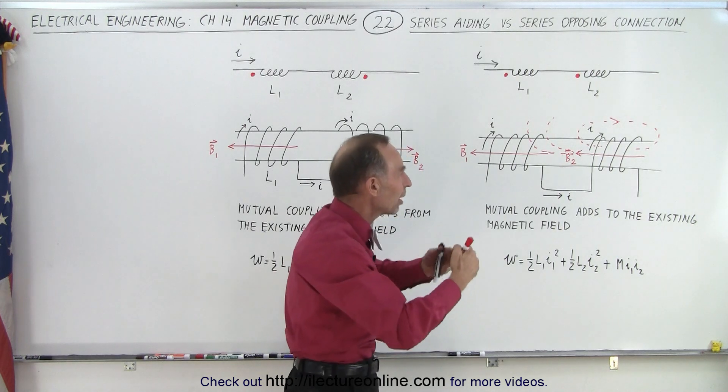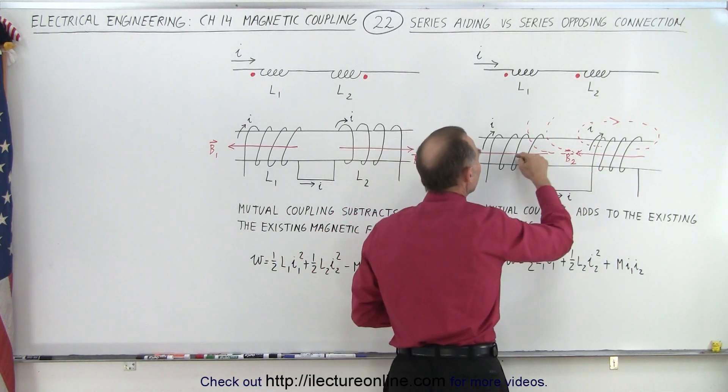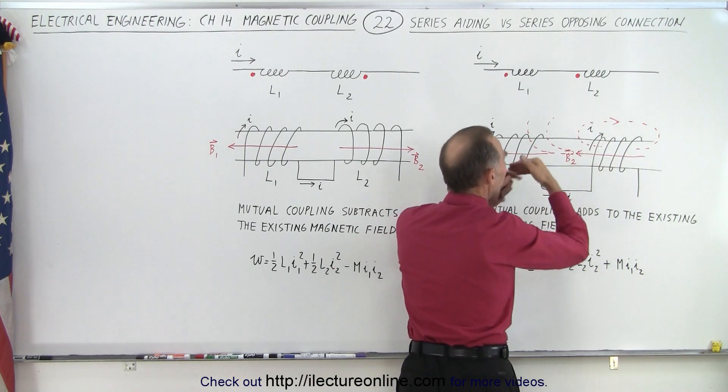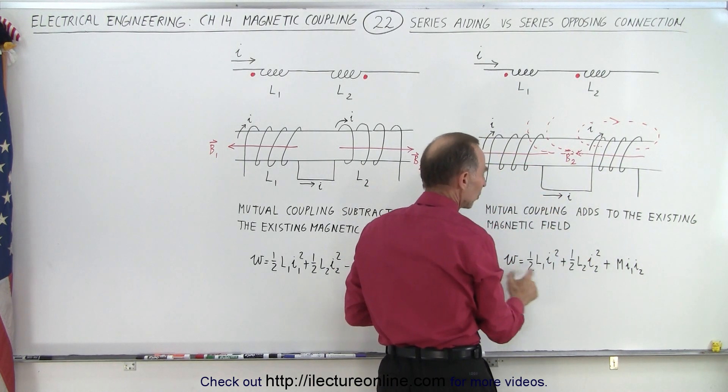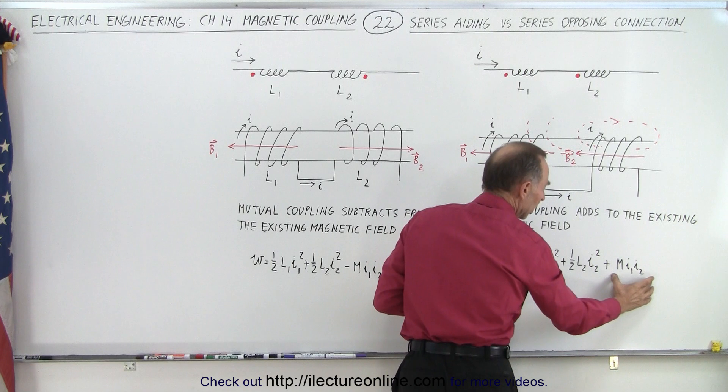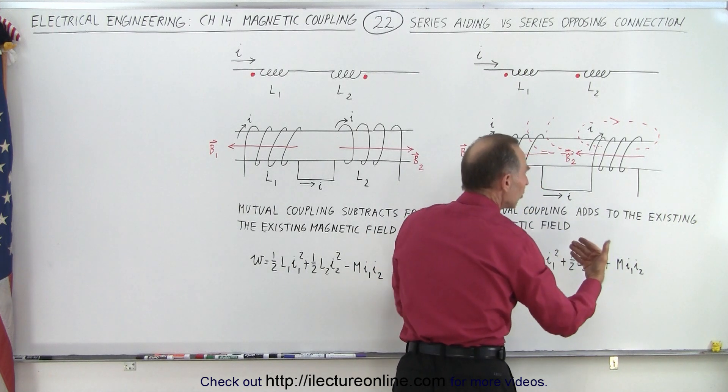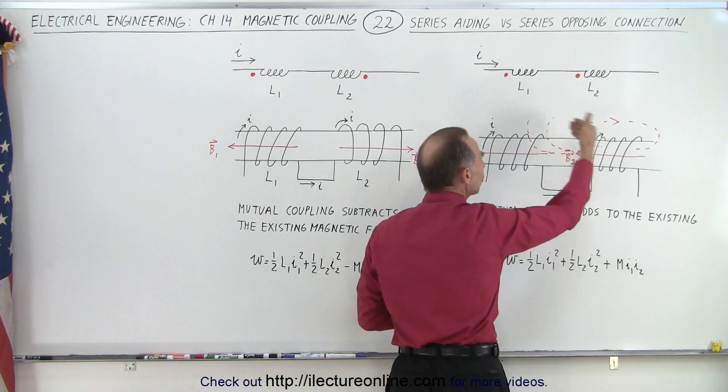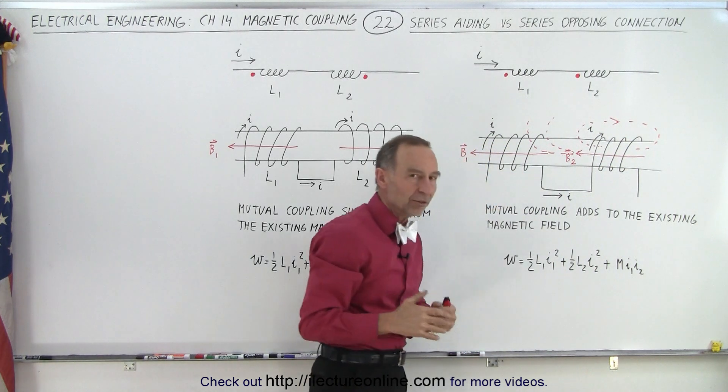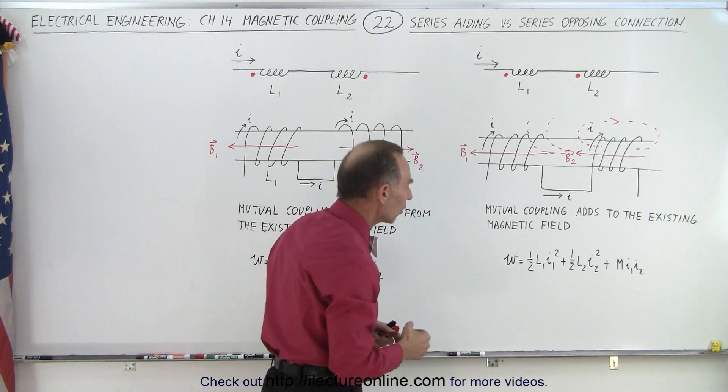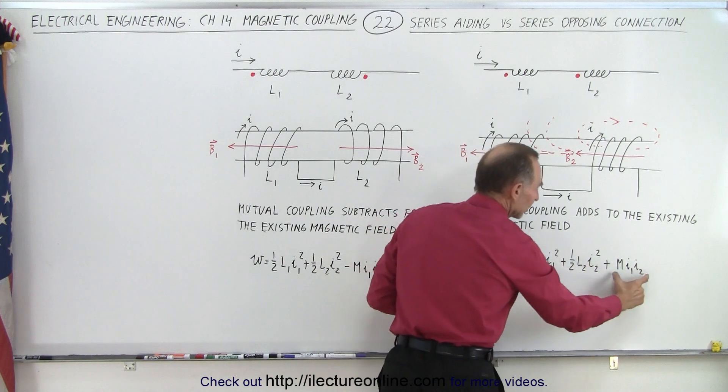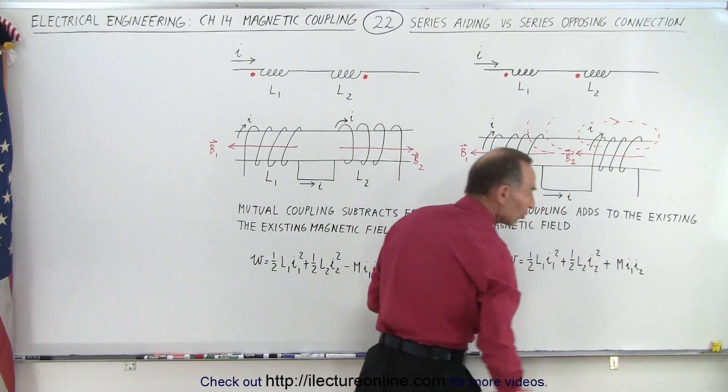Aiding meaning that it will build up additional magnetic field in both coils due to the mutual coupling between the two coils. And that's why we have this additional term that can store additional energy because you're actually increasing the flux, the magnetic flux inside each of the two coils and the total energy in the circuit will then be increased by this term.